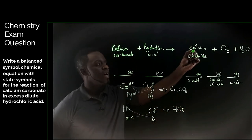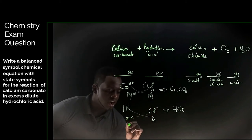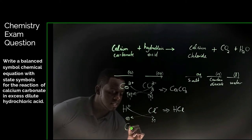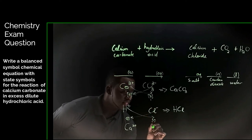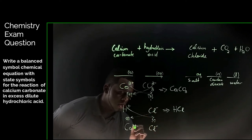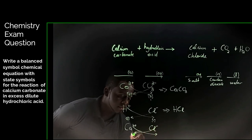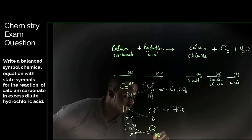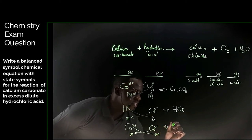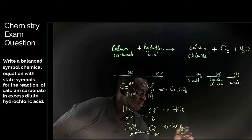And lastly, calcium chloride. We know the charge for calcium is Ca2+ and for chloride, it is Cl-. We take the 2 from the calcium and the 1 from the chloride and that gives us a formula of CaCl2.